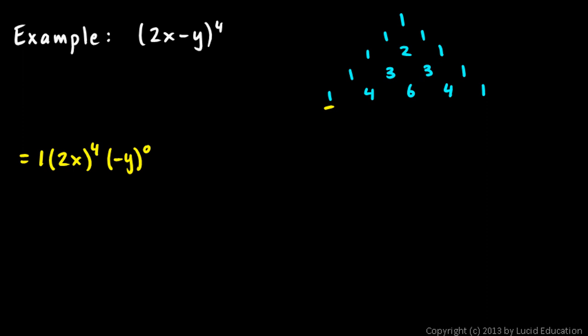Now anything to the power of 0 is just 1, so we don't actually have to write that, so I'm just going to erase that. And then I'm going to move on to the next term. So now I have a plus sign there for your next term, and then we have a 4, and now we'll have a 2x cubed and a negative y to the power of 1.